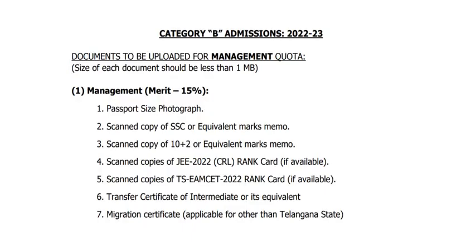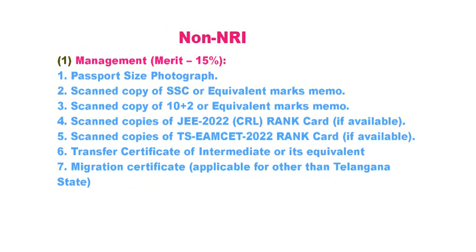For Category B admissions under Management Quota merit, required documents include: Intermediate marks memo (Class 11 + 12), scanned copy of EAPCET 2022 CRL Rank Card if available, Mains Rank Card, MSET Rank Card, Transfer Certificate from Intermediate college, and Migration Certificate (applicable for students from outside Telangana state).